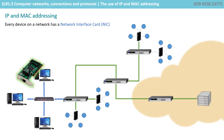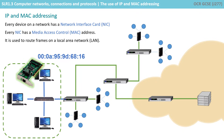Every device on the network has a network interface card, although this may be built into the motherboard. Every network interface card has a media access control address, or a MAC address, and it's used to route the frames on a local area network. Traditional MAC addresses are 12 digits — that's 48-bit hex numbers — written in six pairs separated by colons, as shown here.